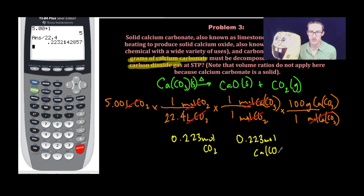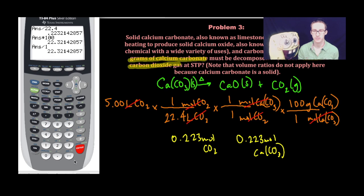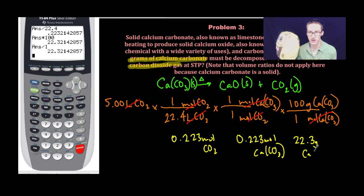Because the relationship is one to one. Finally, to get to mass in grams... So, in the lab, if I wanted to get 5 liters of carbon dioxide produced, assuming 100% yield, I would need to start with 22.3 grams of calcium carbonate. Boom! Stoichiometry!